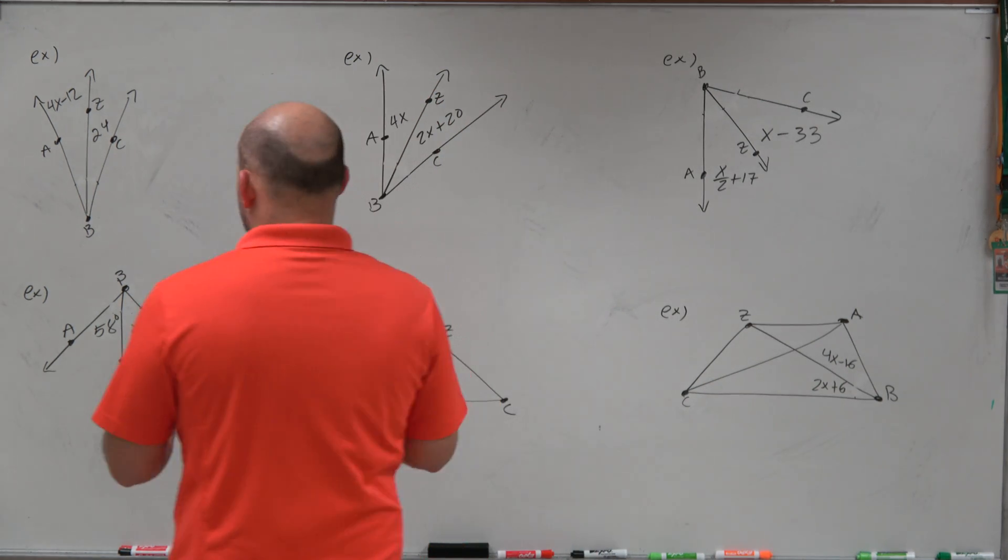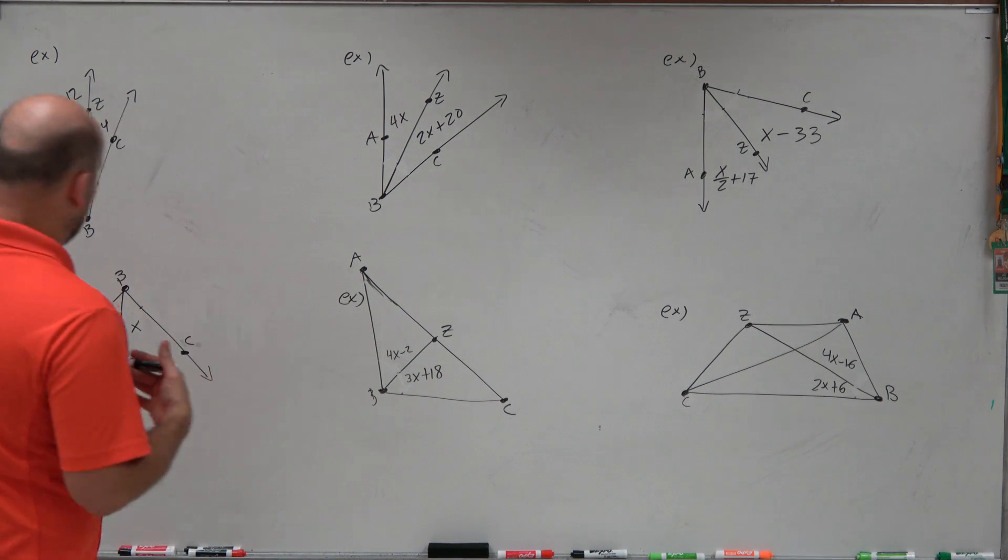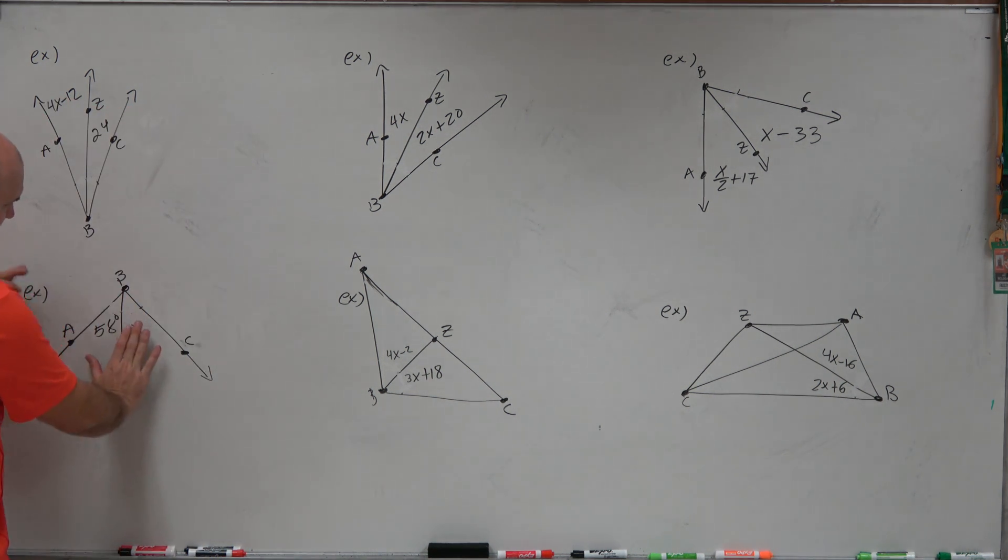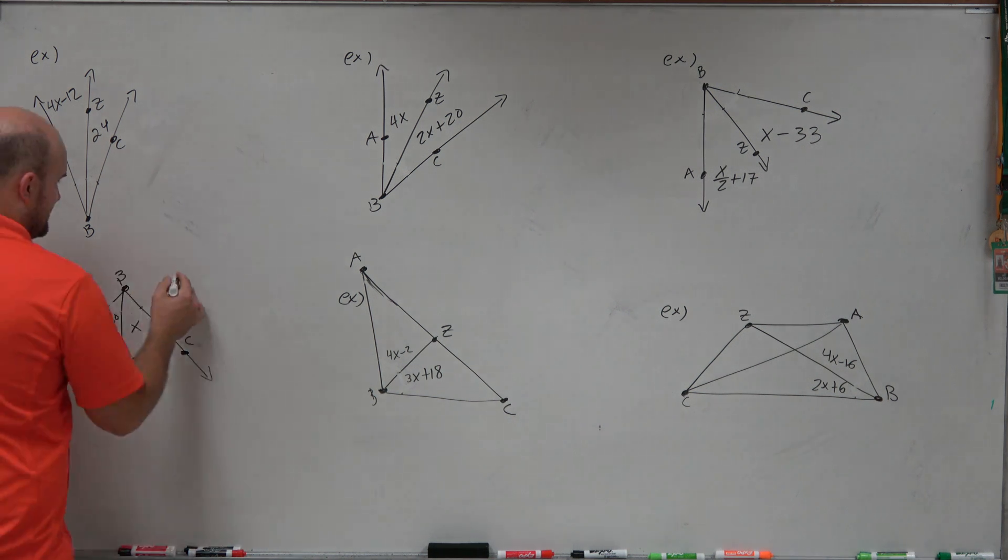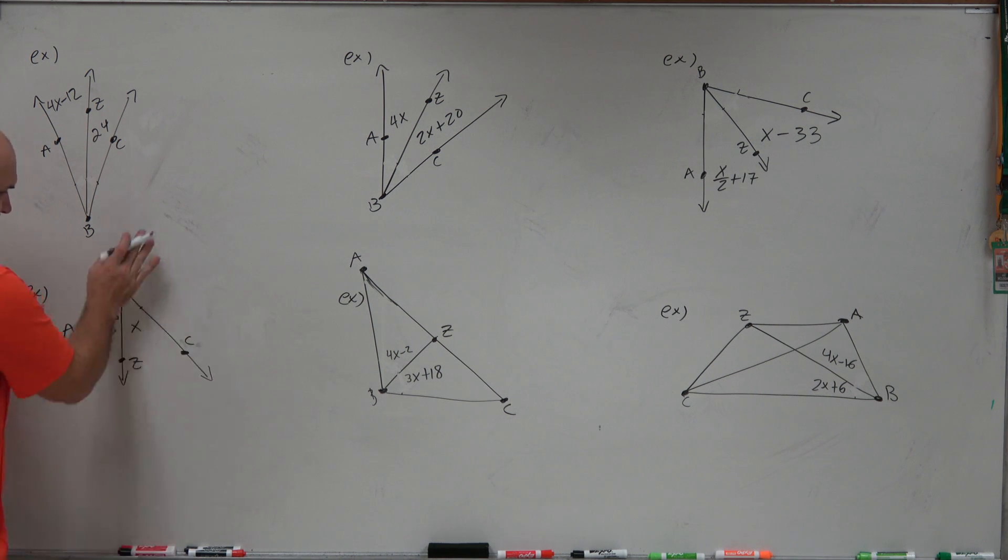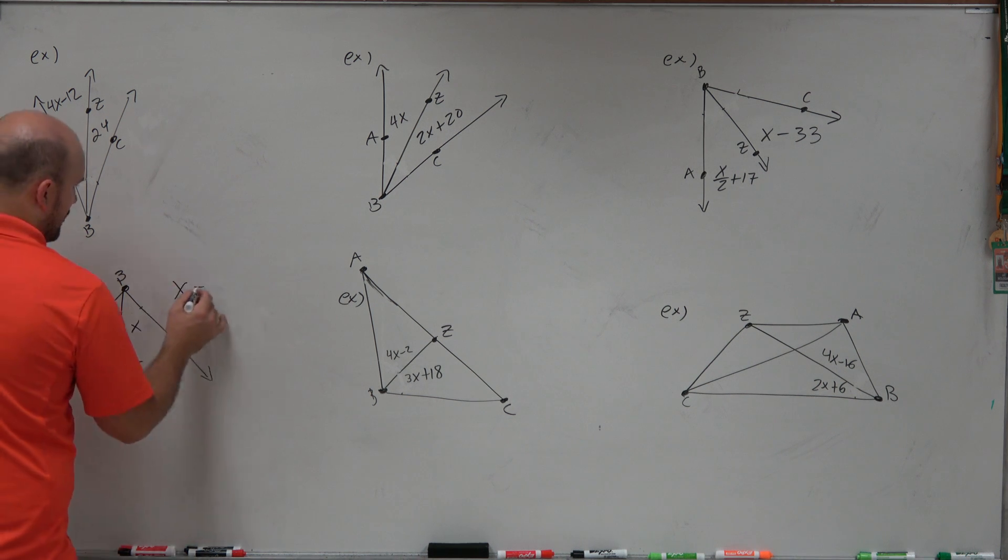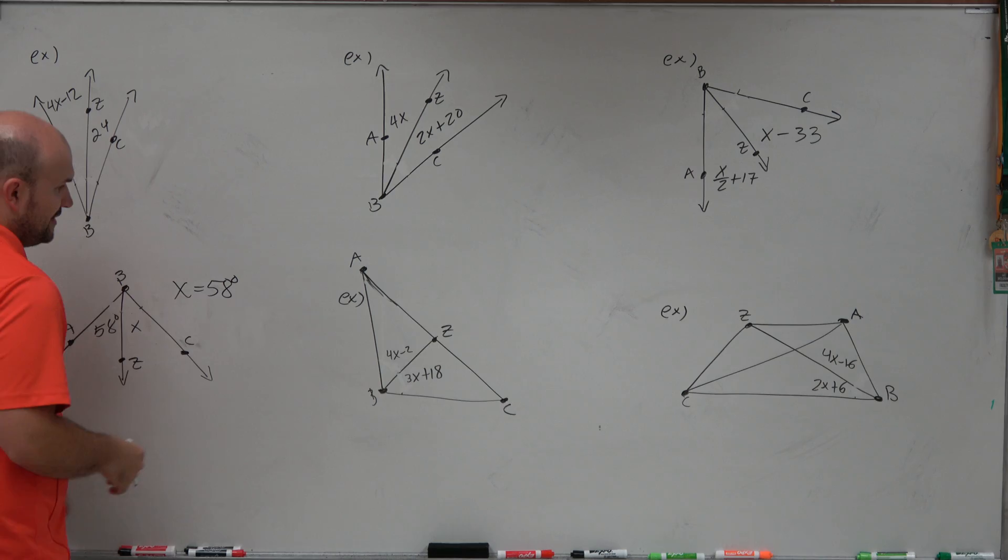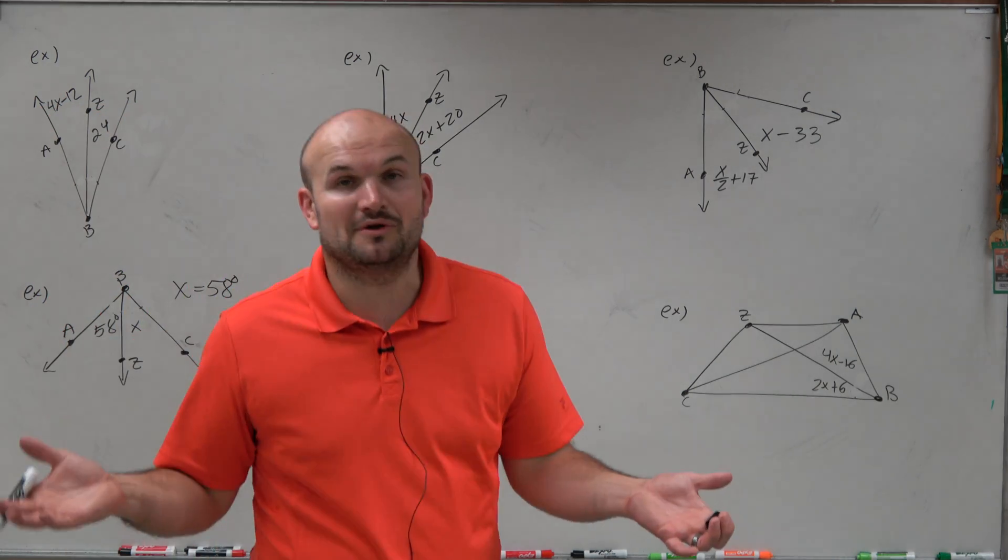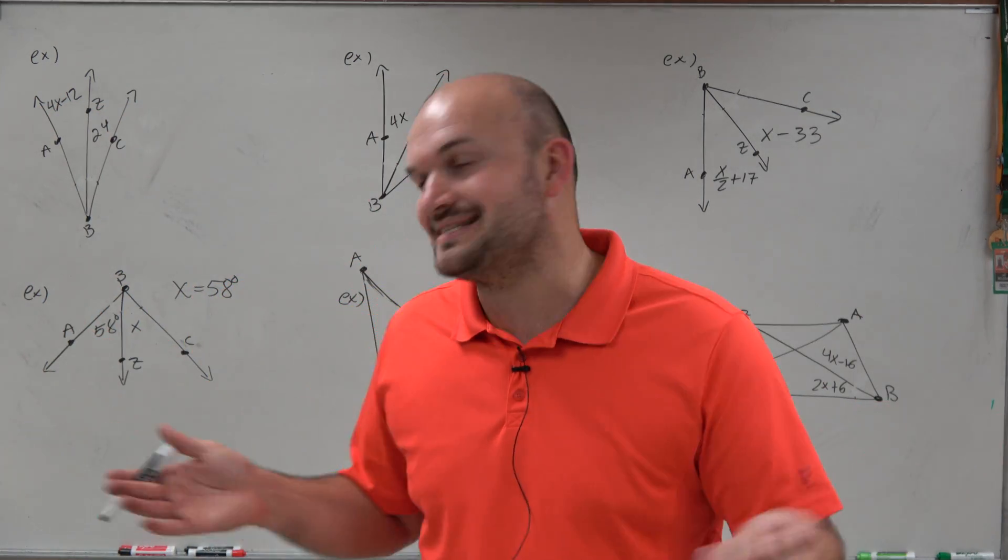So what's helpful about that is now I can basically create an equation that if I have this larger angle and now I break it up into two similar portions by an angle bisector, those two portions are exactly the same. So therefore, for instance, looking at here, if my line BZ is my angle bisector, that means 58 degrees is equal to x, or x is equal to 58 degrees. And therefore there's no other expression to do. That was as easy as that one gets.